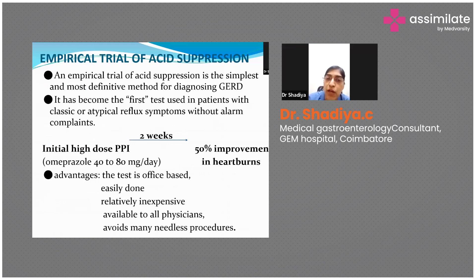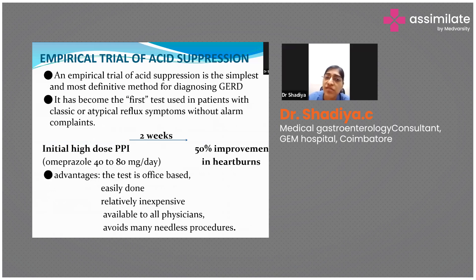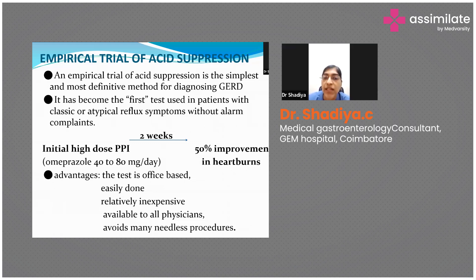Empirical trial of acid suppression is the simplest and most practical method for diagnosing GERD. A trial of PPI has become the first test used in patients with classic symptoms. An initial high dose of omeprazole 40 to 80 mg per day for two weeks is given; if there is 50% improvement in heartburn, the patient can be diagnosed with GERD.